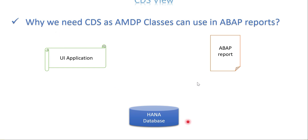The scenario is: I have a HANA database and two applications that need data from the database — one is an ABAP report and another is a UI application. It could be anything like a report, a function module, or a class and method — whatever it is, it needs data from a HANA database.